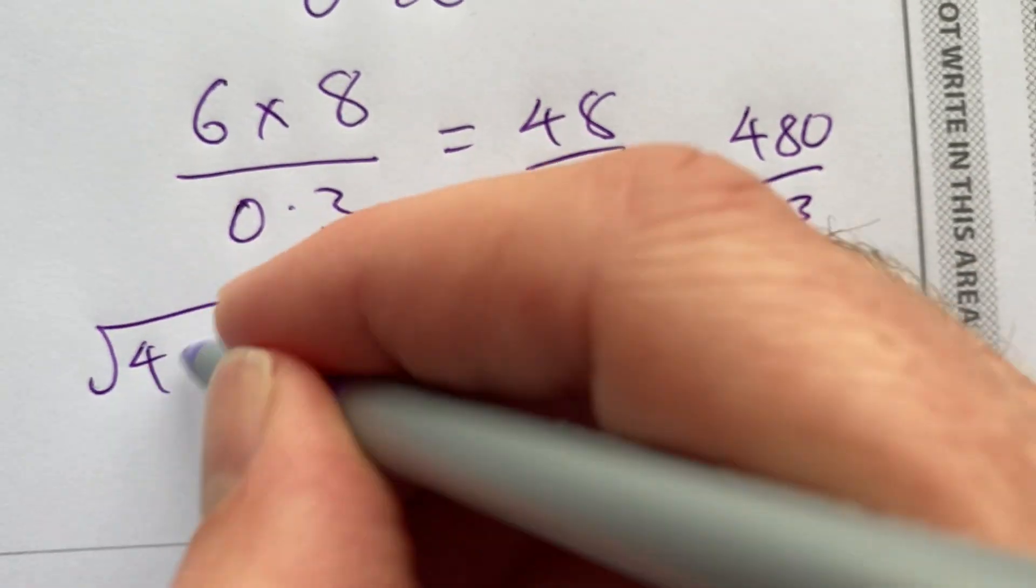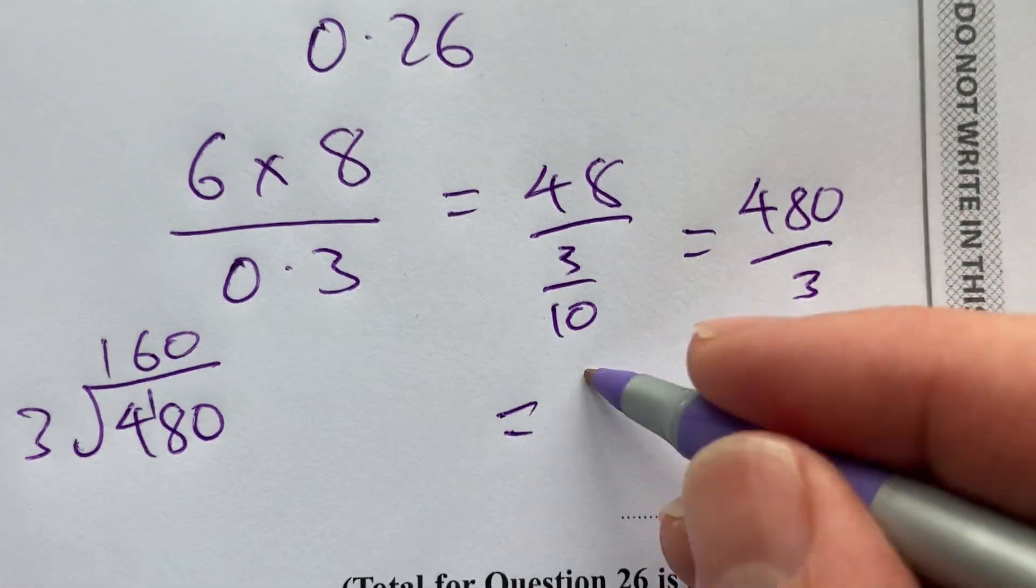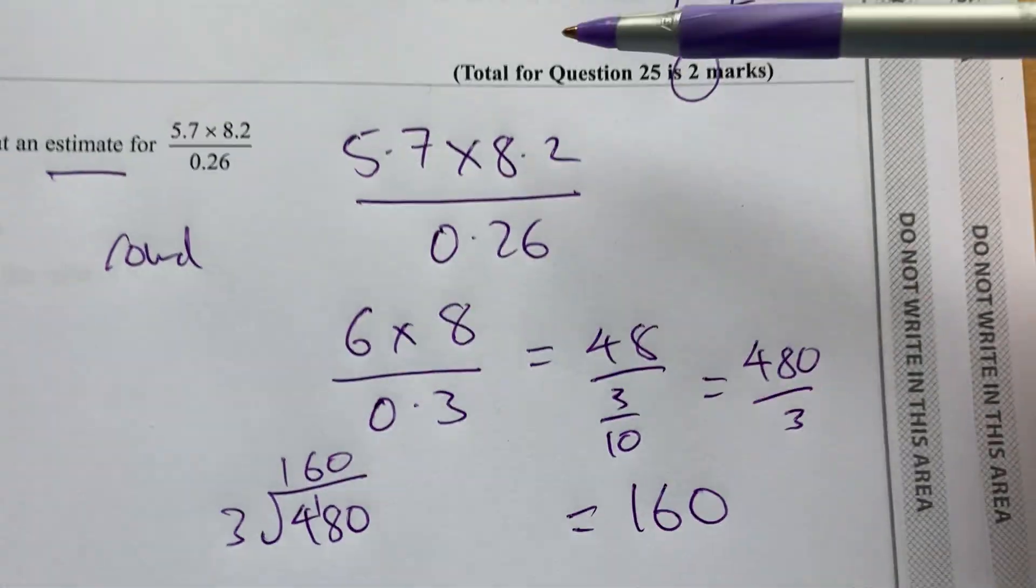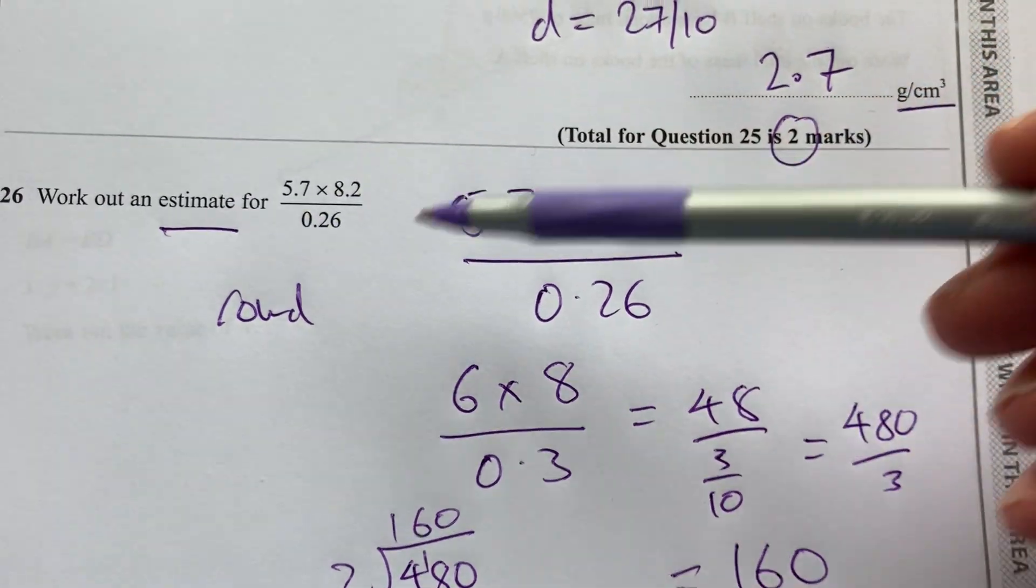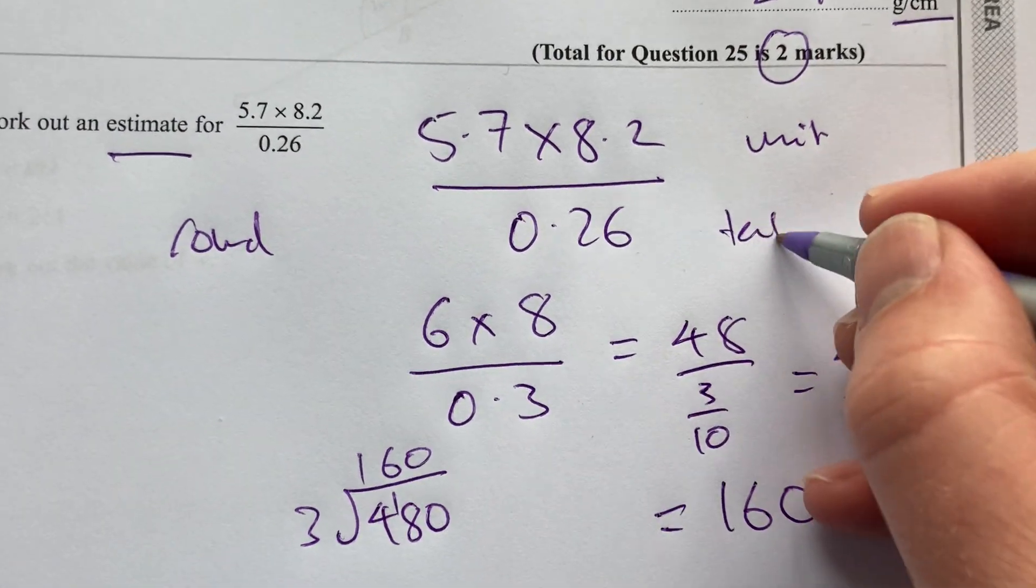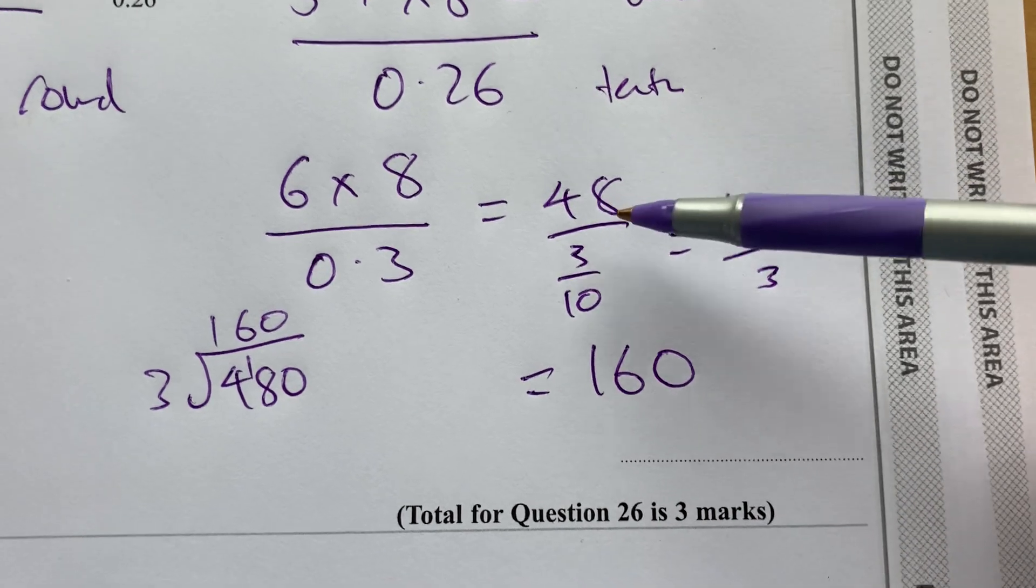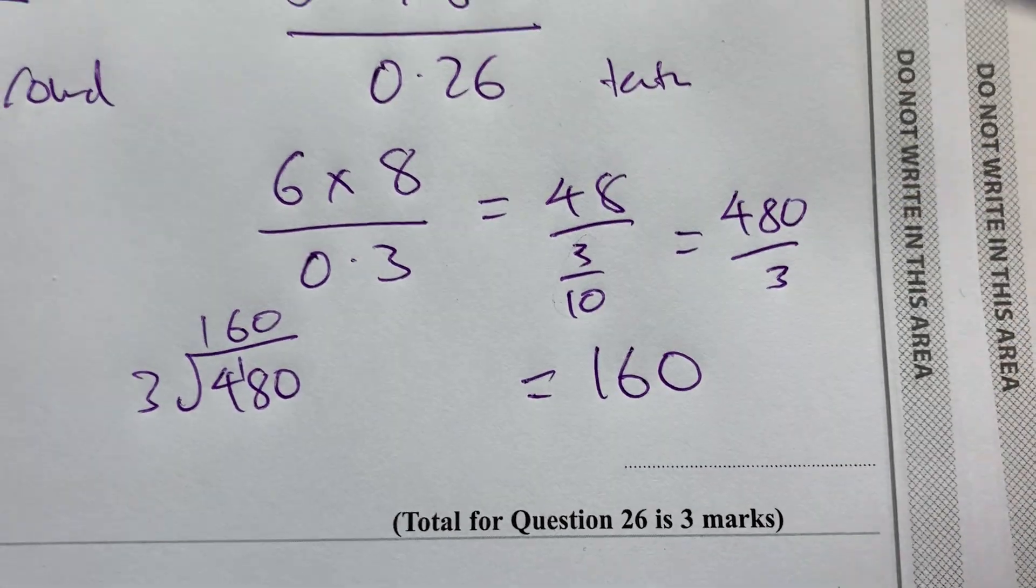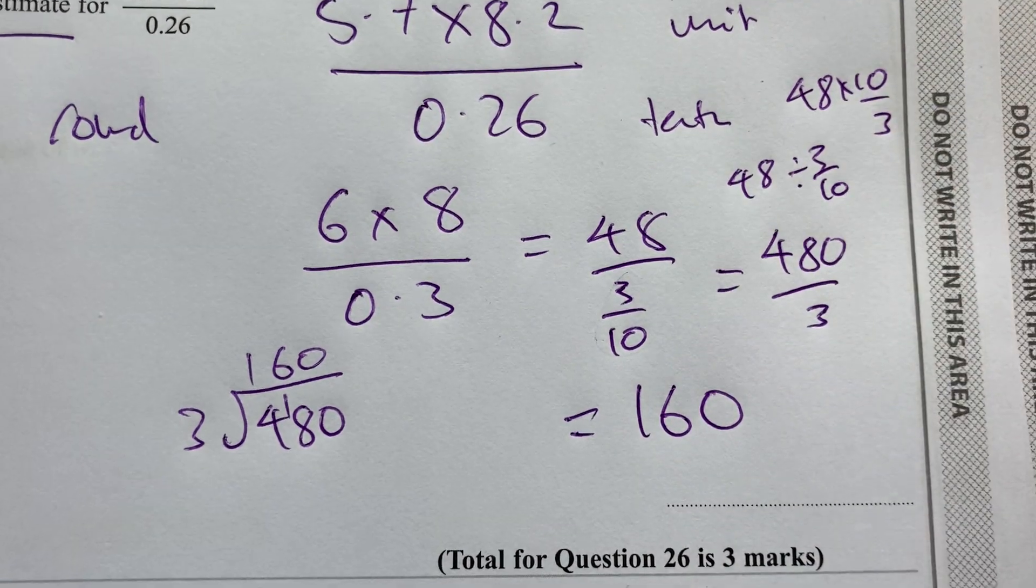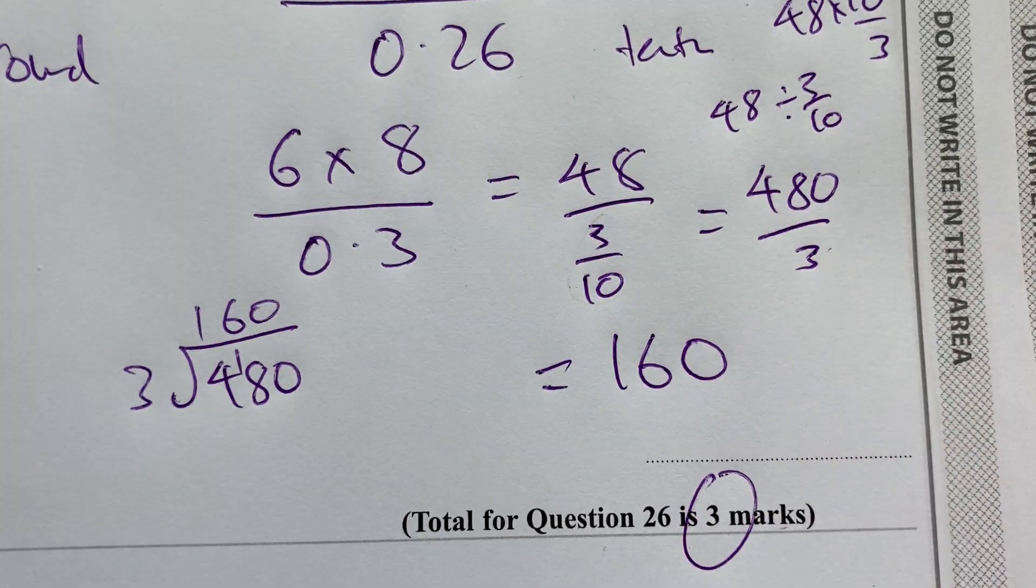So I'm going to do 480 divided by 3, which will give me, if I do some bus stop division there, 1, 6. I'm going to get about 160. Okay, but they'll give you a range of answers that you could have got there because the rounding, they haven't told you what to round it to. I've chosen to do rounding to the nearest unit there and to the nearest tenth there. And then done that fraction there. 48 divided by 3 tenths, you have to invert that. So it's 48 divided by 3 tenths, which is 48 times 10 over 3, which is the 480 divided by 3. Okay, that's three marks there.